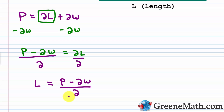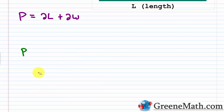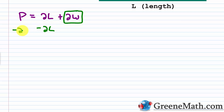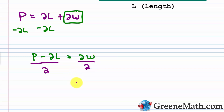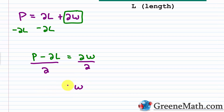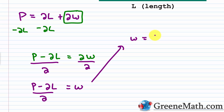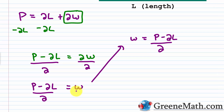To solve for W, I use the same thought process. I begin by isolating the term with W, so I subtract 2L from each side, giving P minus 2L equals 2W. To isolate W, I divide both sides by 2, so W equals P minus 2L over 2. I can switch the variable to the left side — that's perfectly legal — and both forms are acceptable.